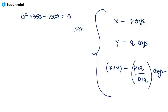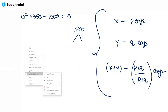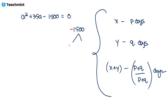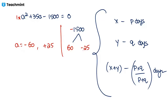You need to split 1500 so that the difference gives +35. Trying 60 and 25: 60 × 25 = 1500 and 60 − 25 = 35. So the factors are (a + 60)(a − 25) = 0. This gives a = −60 or a = 25. Since negative time is not allowed, a = 25 is acceptable.